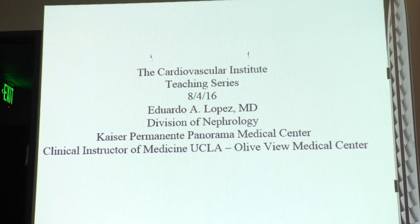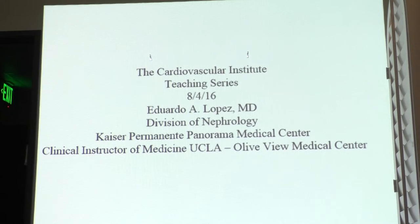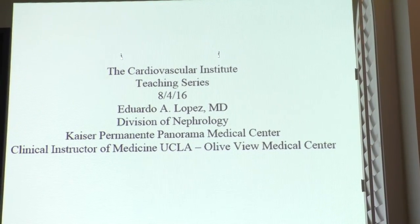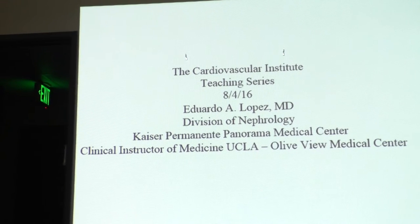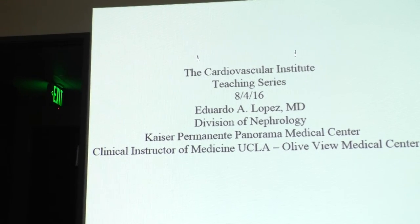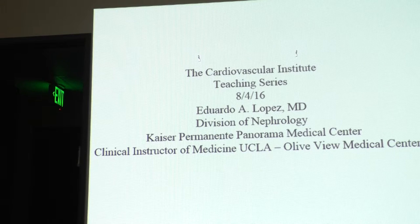Rhabdomyolysis: typically a patient found down, a woman in status epilepticus, or someone in a weird position. I was once consulted in the PACU for bad renal failure — the patient's CPK was greater than 80,000. You can get anesthesia-related rhabdomyolysis as an idiosyncratic reaction, or post-op from awkward positioning. So overproduction: always think rhabdo and hemolytic anemias.